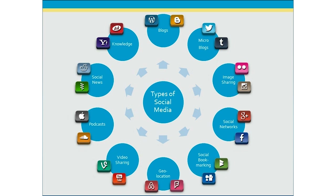The third category of social media platforms are image sharing sites, where users upload, share, and comment on images. Two popular image sharing sites would be Instagram and Flickr. Another type of social media platform would be social networks, where members can connect with other people and share personal information, their interests, photos, and status updates. Two common social network platforms would be Facebook and Google+.